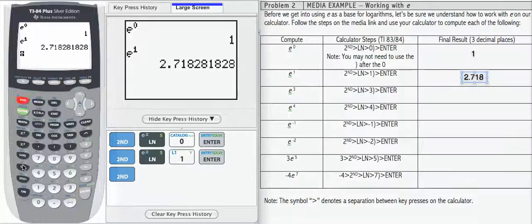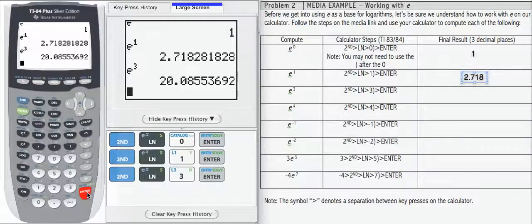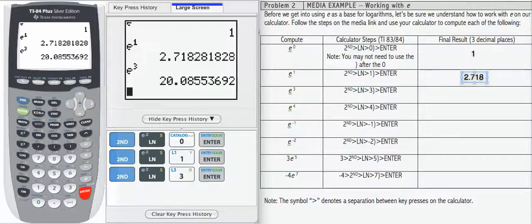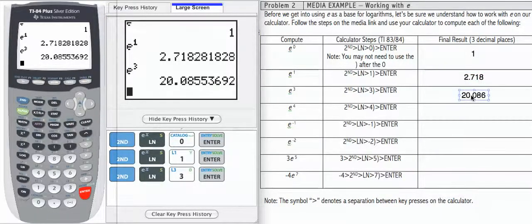Moving on, we have e to the third, so I'm going to enter e to the third on my calculator. 20.0855, etc. We're going to round that to three decimals, 20.086.